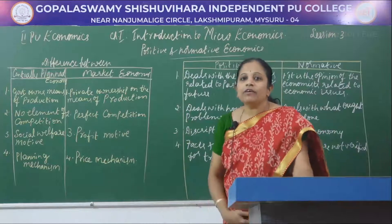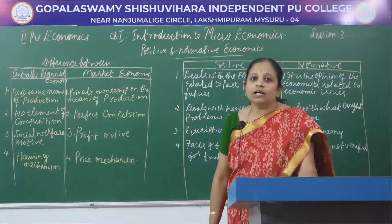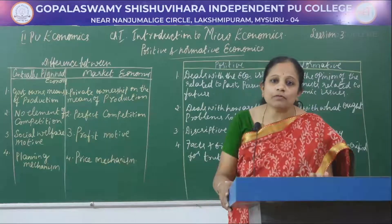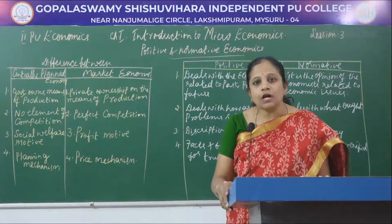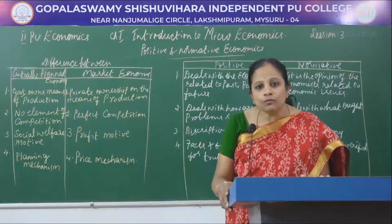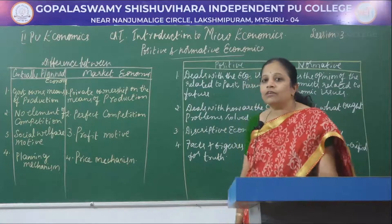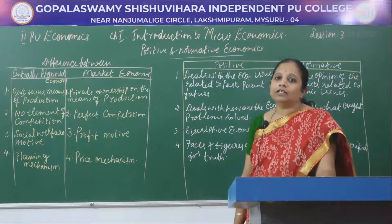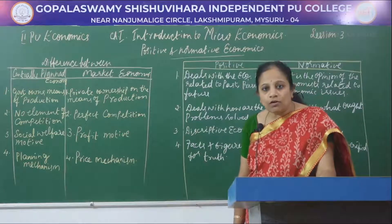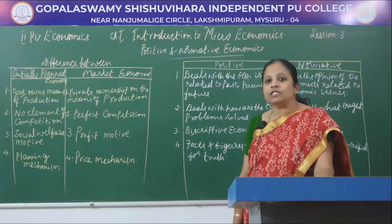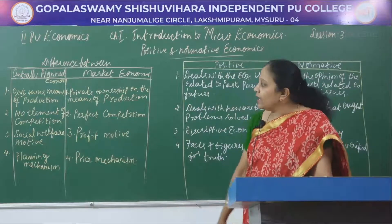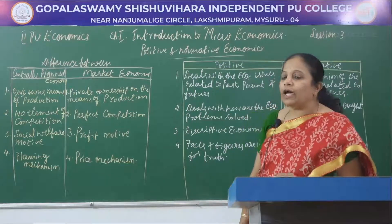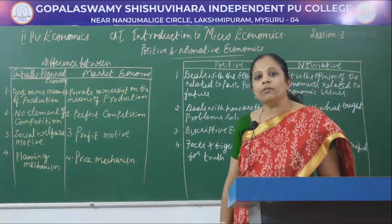In our previous session, we discussed about the three different central problems of an economy: what to produce, how to produce, and for whom to produce. After that we understood about the different types of economies — the centrally planned economy, also called the socialist or government economy; the market economy or capitalist economy; and the third one, mixed economy.